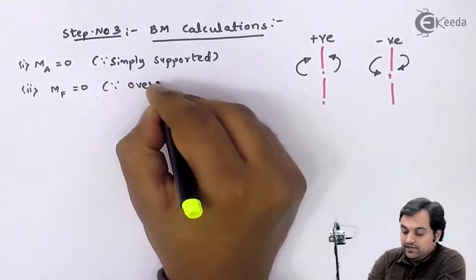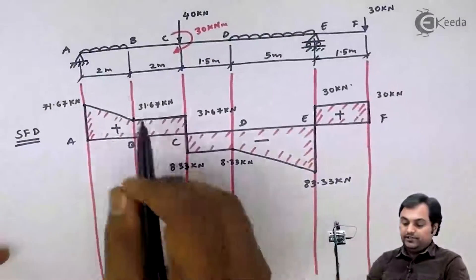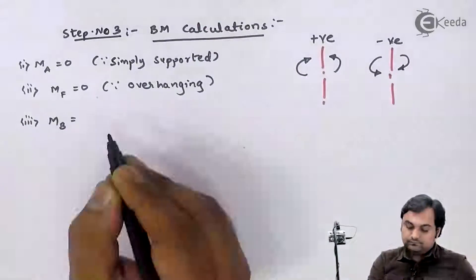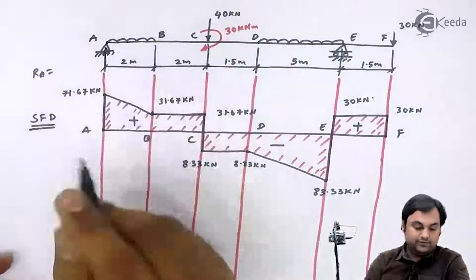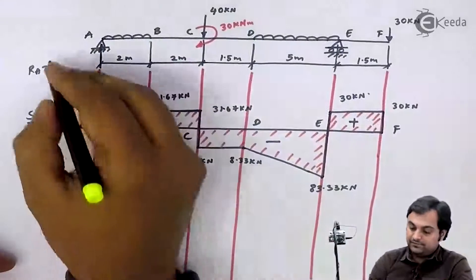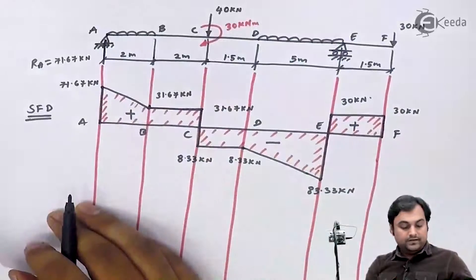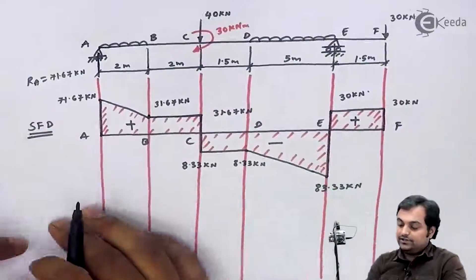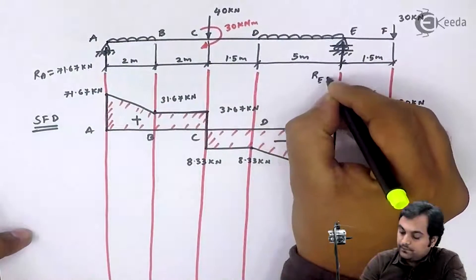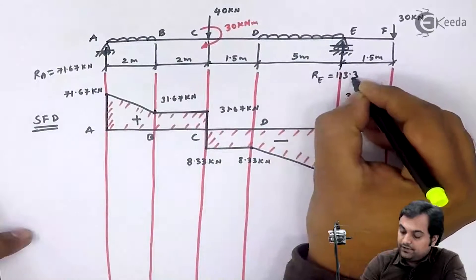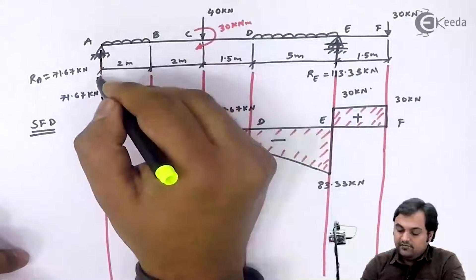Now I will calculate the bending moment at point B. The reaction at A was 71.67 kilo Newton and the reaction at E was 113.33 kilo Newton.